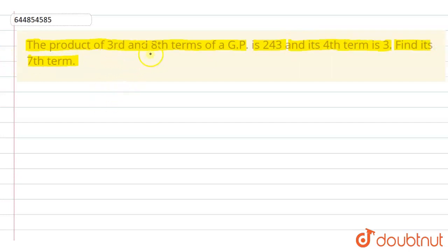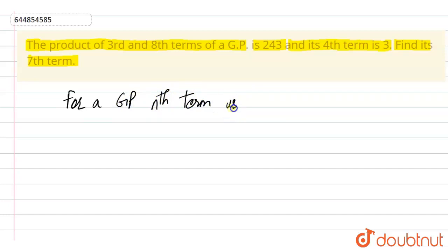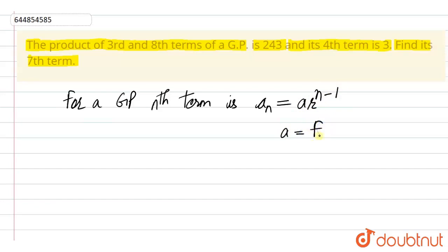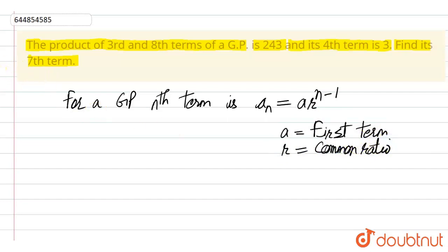We have a GP, and the product of the third and eighth terms is given. For a GP, the nth term is denoted by aₙ and is equal to a·rⁿ⁻¹, where a is the first term of the GP and r is the common ratio.